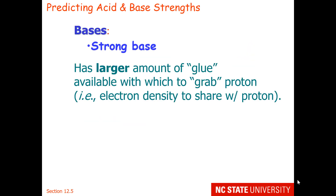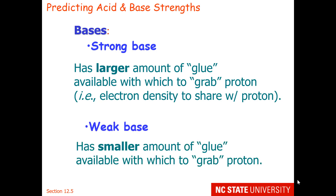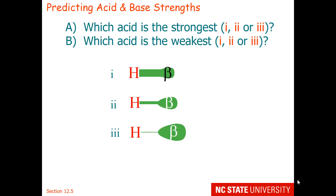Bases are the opposite. A strong base has a larger amount of glue or electron density with which to grab a proton. A weak base has a smaller amount of electron density available with which to grab a proton.